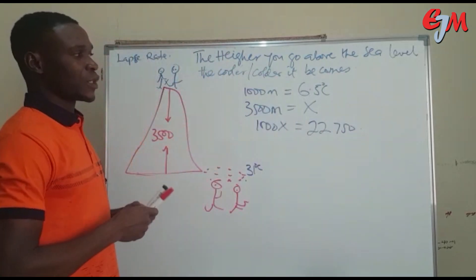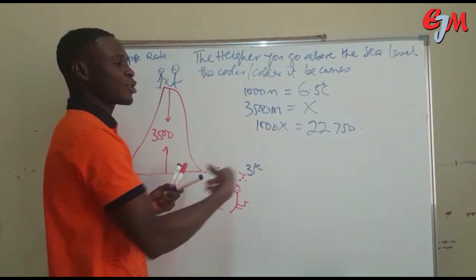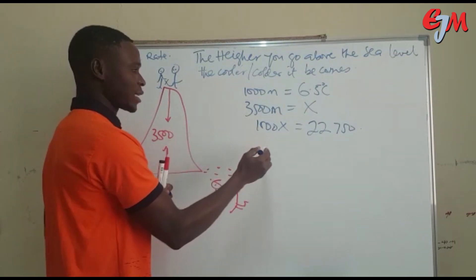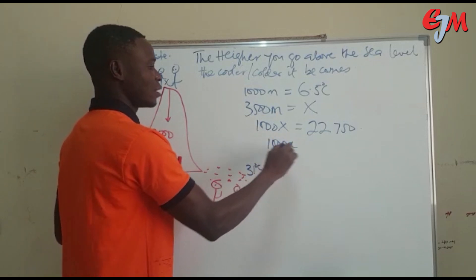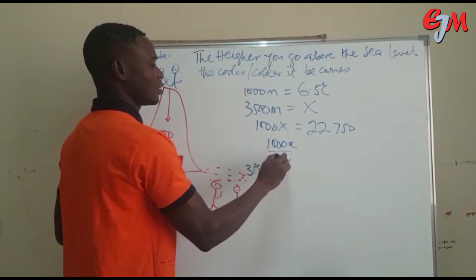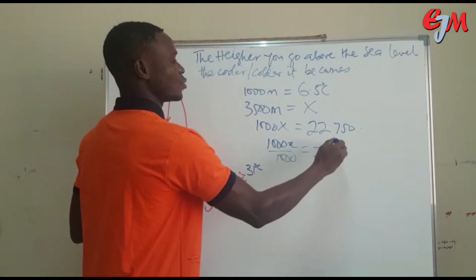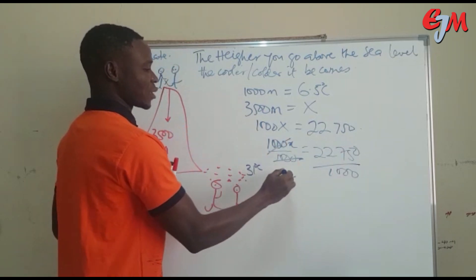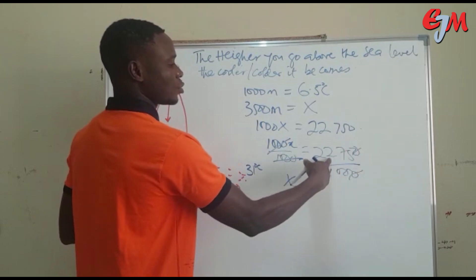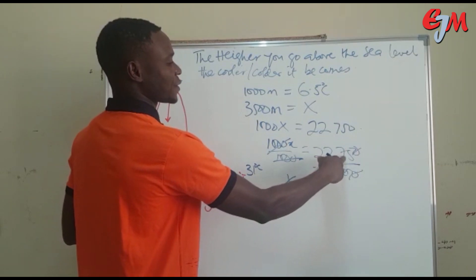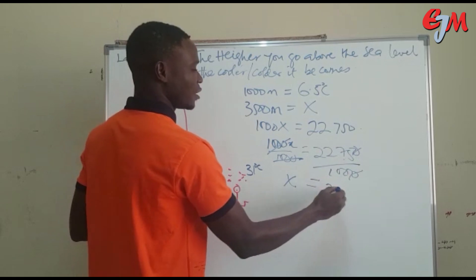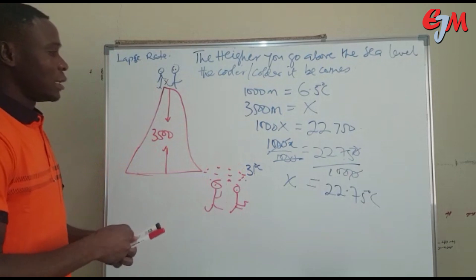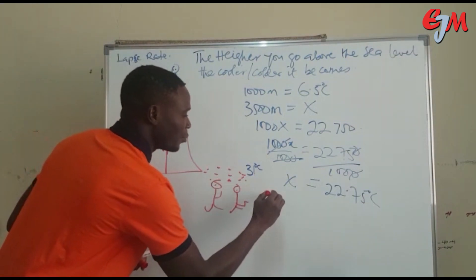Dividing both sides by 1,000 to solve for x, we get x equal to 22.75 degrees Celsius. That is the temperature drop at 3,500 meters.